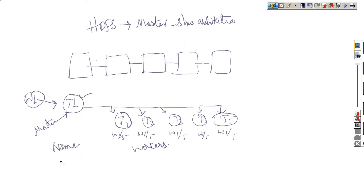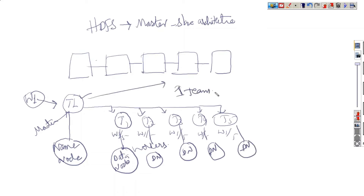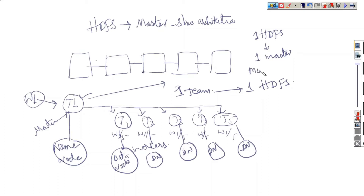That master process is called as name node. That master is called as name node. And these slaves — these team members — will be called as data nodes. Only one instance of HDFS will contain one master and multiple slaves. It can be two or three or four, depending upon the requirement. The master process is named name node and the slave process is named data node.